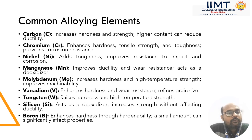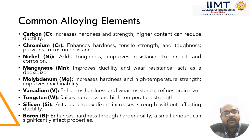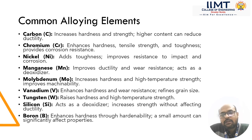Now we will discuss what are the effects of these alloying elements on steel after their adding. First of all, carbon. Carbon increases hardness and strength of steel. Its higher content can reduce the ductility. Chromium enhances hardness, tensile strength and toughness. It also provides higher corrosion resistance.